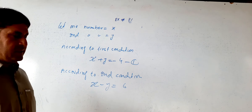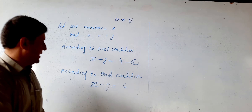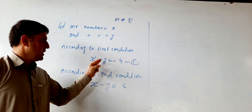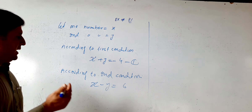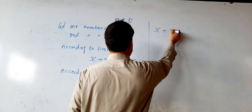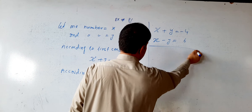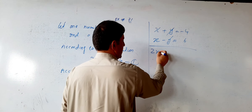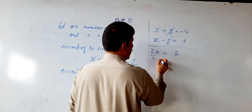So we have two equations: equation one is x + y = −4, and equation two is x − y = 6. Adding equation one and equation two together: the y terms cancel, and we get 2x = −4 + 6 = 2.